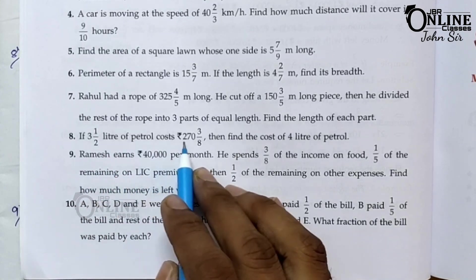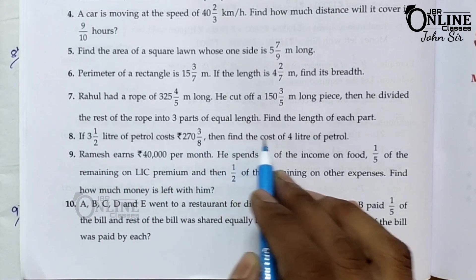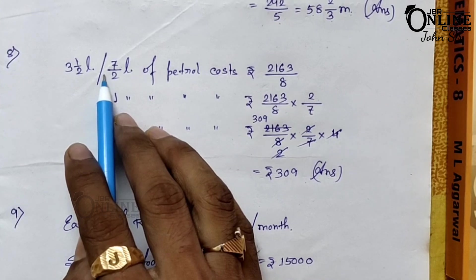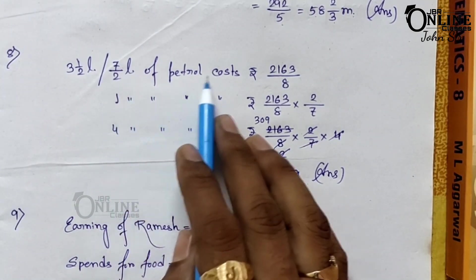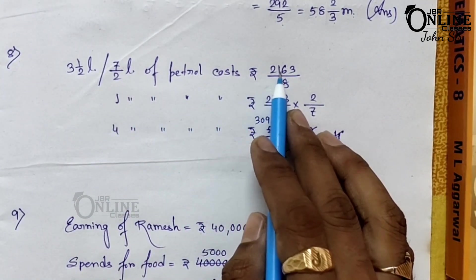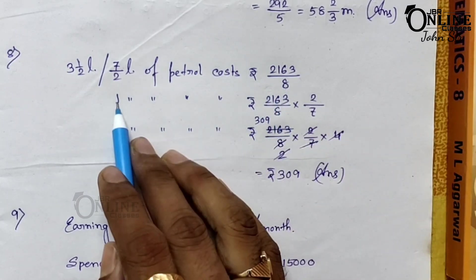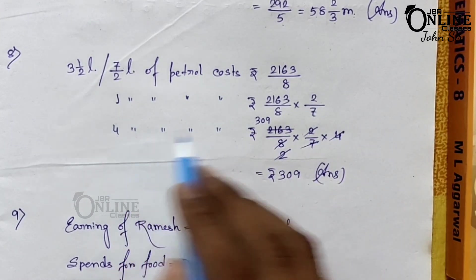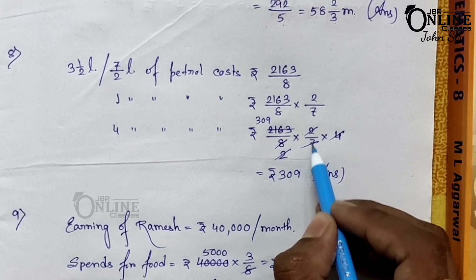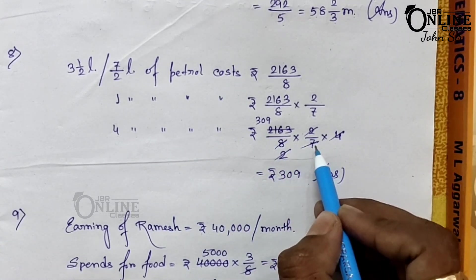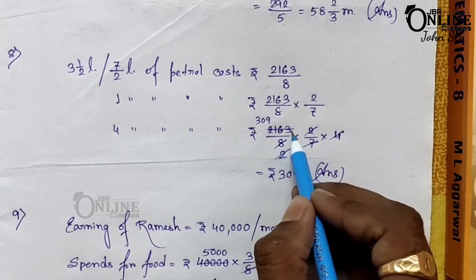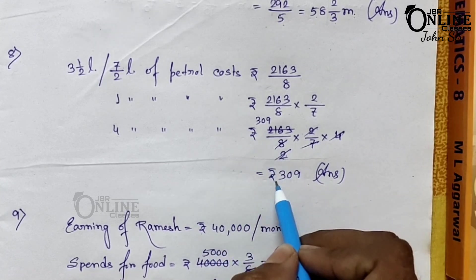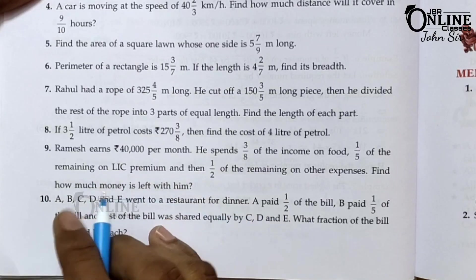Sum number 8: if 3 and 1/2 liters of petrol cost 270 and 3/8 rupees, find the cost of 4 liters. Here 7/2 liters costs 2163/8 rupees. So 1 liter costs 2163/8 multiplied by 2/7. Then 4 liters cost 2163/8 multiplied by 2/7 multiplied by 4. After simplification, the final answer is 309 rupees.